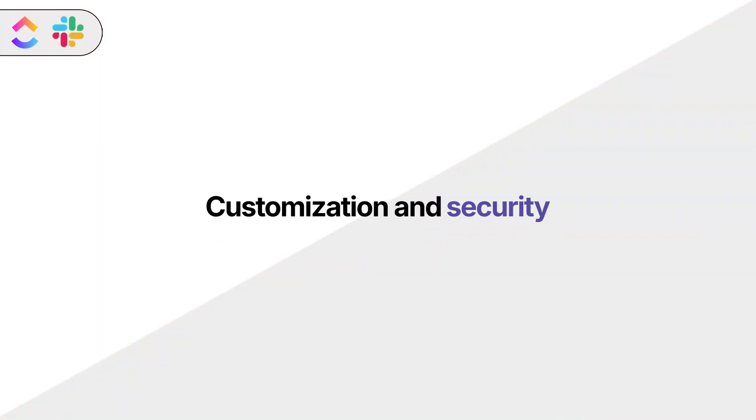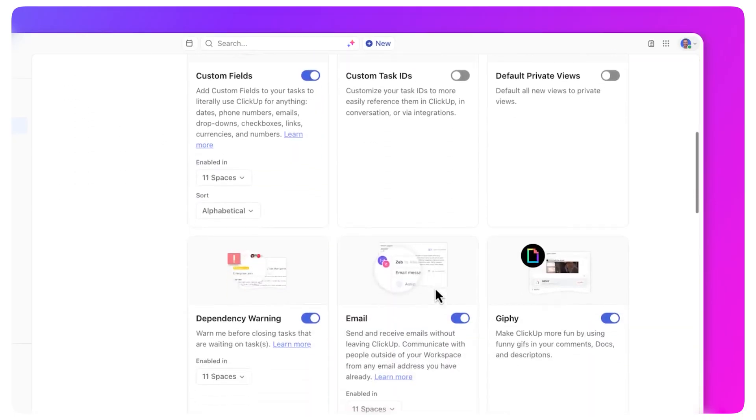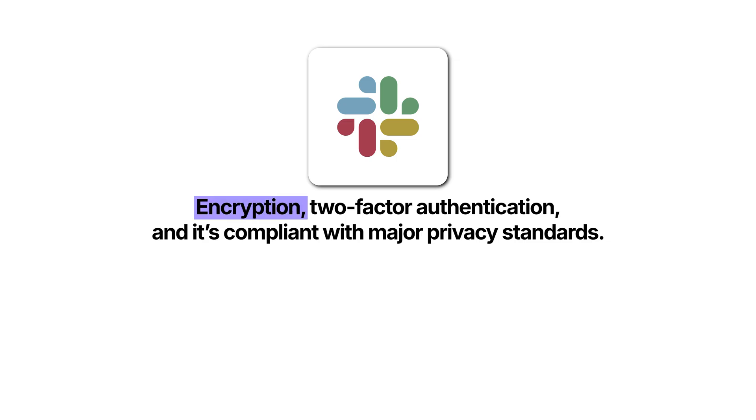Let's quickly touch on customization and security, since both are important if your team has specific needs. ClickUp uses strong security measures — two-factor authentication, encryption, and role-based permissions. What really stands out is customization: you can tailor your dashboards, workflows, and even create custom statuses for your tasks, so if your team has a unique way of working, ClickUp lets you build around that instead of forcing you to change your process. Slack is solid on security too — encryption, two-factor authentication, and compliance with major privacy standards. You can customize workspaces, channels, themes, and notification settings, but that's about as deep as it goes.